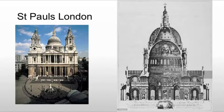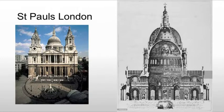And then you have St. Paul's in London. Same basic idea, except here they use three separate domes: an outer dome for the weather, an inner dome for structure, and the innermost dome, which is primarily decorative.